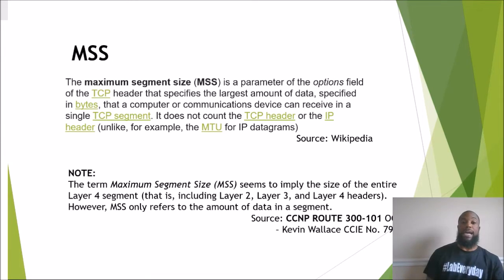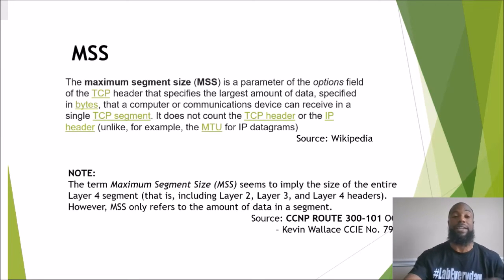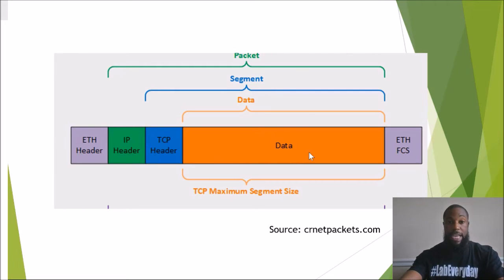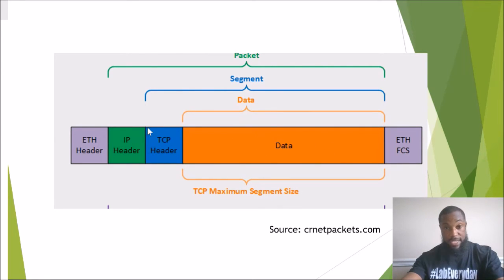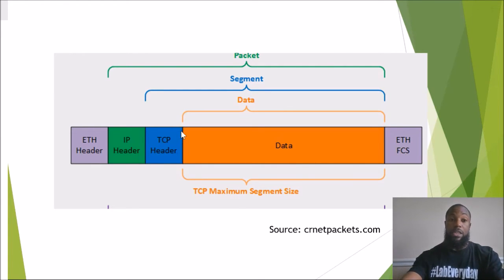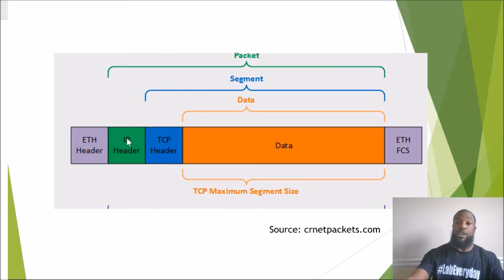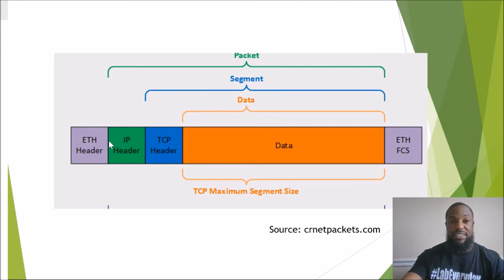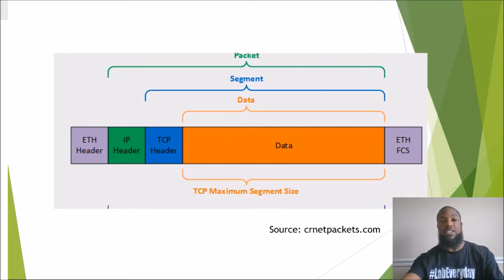The term Maximum Segment Size seems to imply the entire Layer 4 segment — Layer 2, Layer 3, and Layer 4 — but it doesn't. MSS only refers to the amount of data in the segment: just the orange payload area, not the TCP header. When modifying the MTU size, which includes the IP header, you're sliding that window down. With Maximum Segment Size, you're modifying just the data boundary — moving that line up and down as needed.